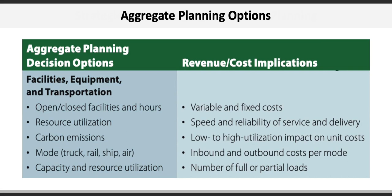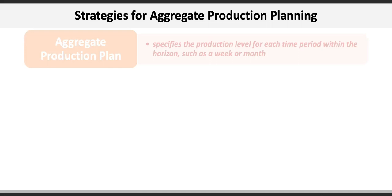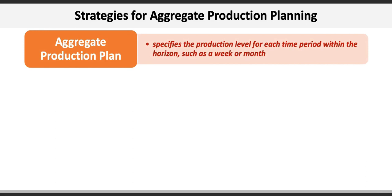Aggregate planning involves the development of an aggregate production plan, along with selection of three different production strategies. An aggregate production plan specifies the production level for each time period within the horizon, such as a week or month, and helps determine what the ending inventory position will be at the end of each period. Once the plan is developed, the fundamental question is to determine how much to produce in each time period to meet the anticipated demands at minimum cost.